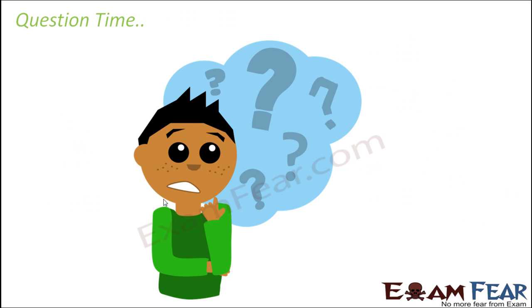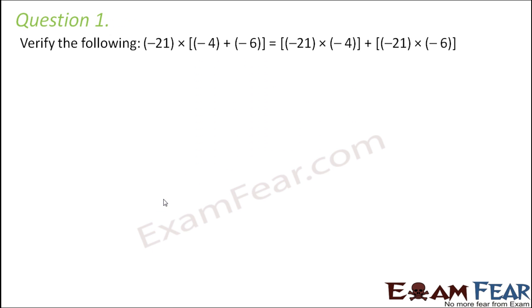So based on whatever we have learned about multiplication of integers using properties, we will look at some questions now. Question number 1: Verify the following: -21 × (-4 + -6) = -21 × (-4) + -21 × (-6). So basically, which property is this? This is nothing but distributive property. So we have to prove this distributive property.